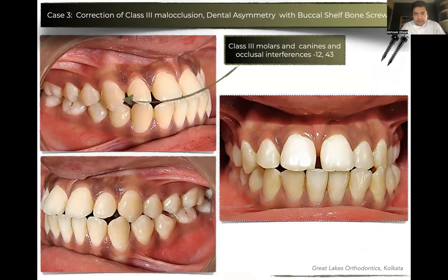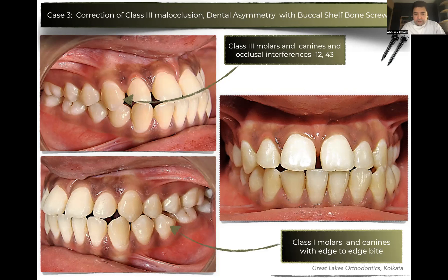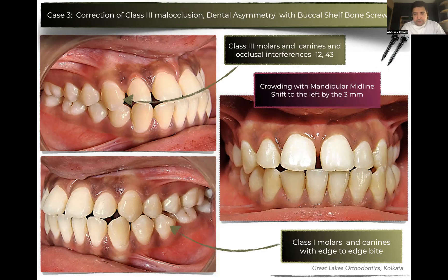When we looked at the intraoral view, we found that the asymmetry was because of a Class 3 molar relationship on the right-hand side. There was an occlusal interference between the upper right lateral incisor and lower right canine, which was causing the mandible to deviate to the left. She had a Class 1 molar relationship and an edge-to-edge bite on the left side and a Class 3 on the right. There was crowding in the mandibular dentition, a midline shift to the left by about 3 millimeters, and it was a unilateral Class 3 on the right-hand side.